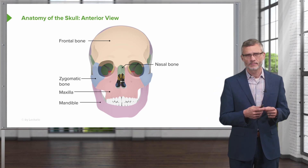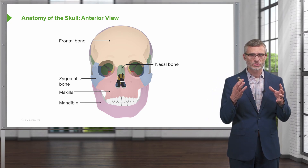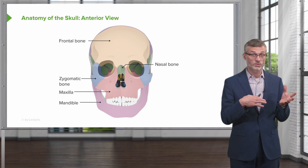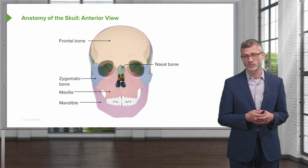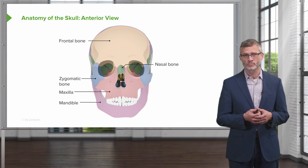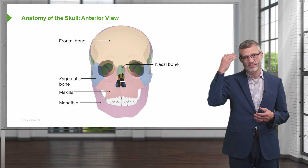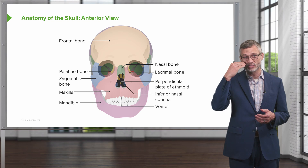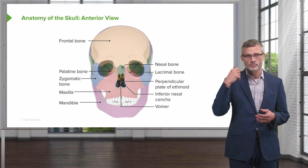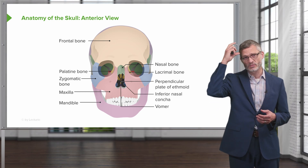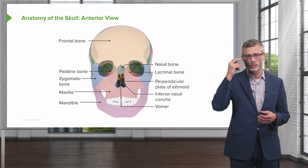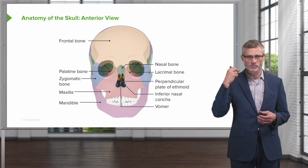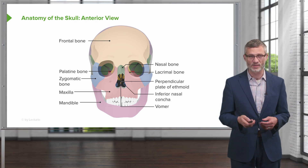Folks who have issues with the trigeminal nerve, as we'll discuss in the neurologic exam, similarly have V1, V2, and V3 broken up by the frontal bones, the maxillary bones, and the mandibular bones in a similar fashion.